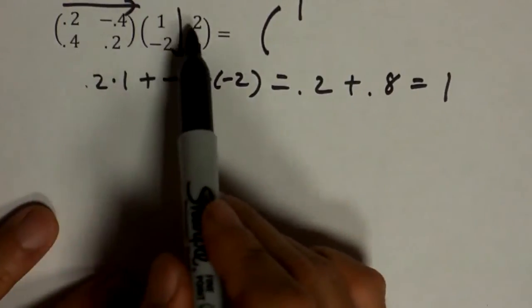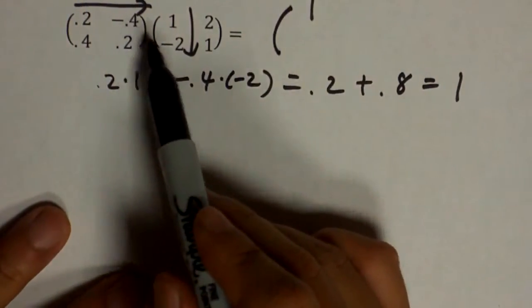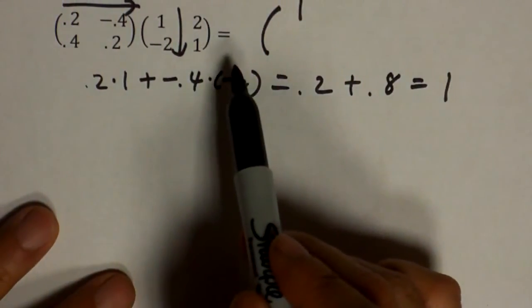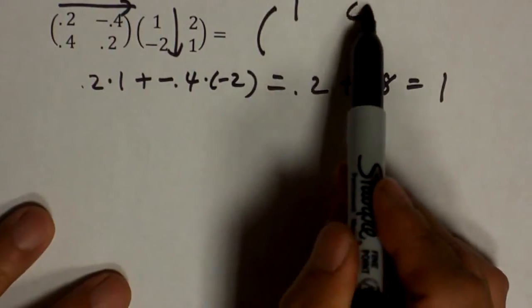And let me just do the mental math for the other ones. Across, down. Point two times two is point four. Negative point four times one is negative point four. And they cancel, giving you zero.